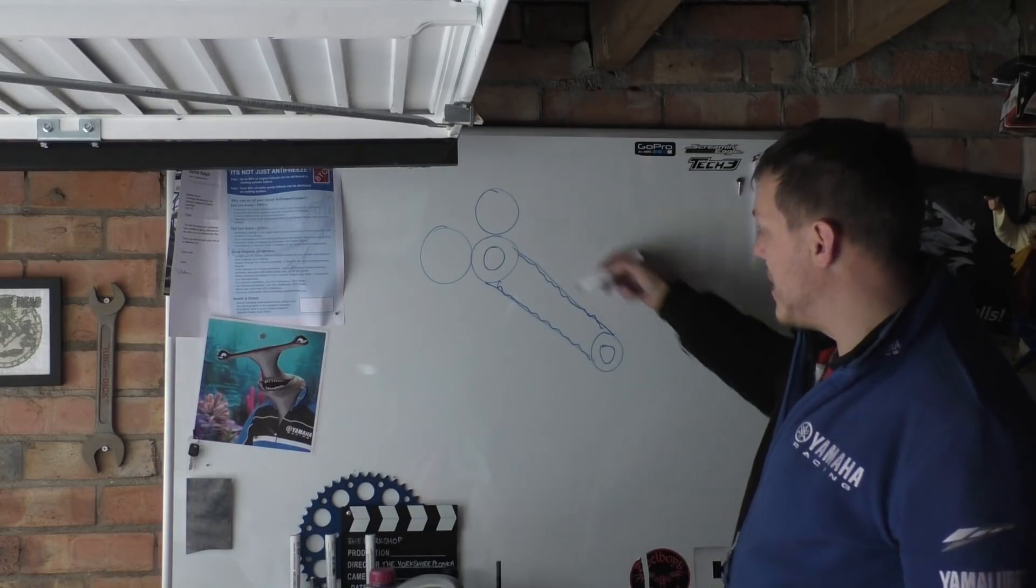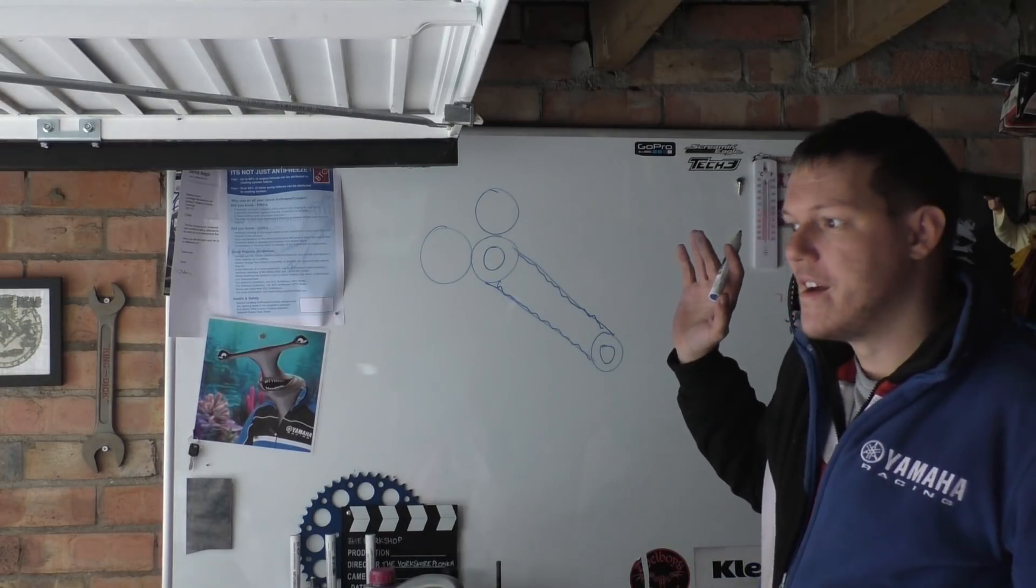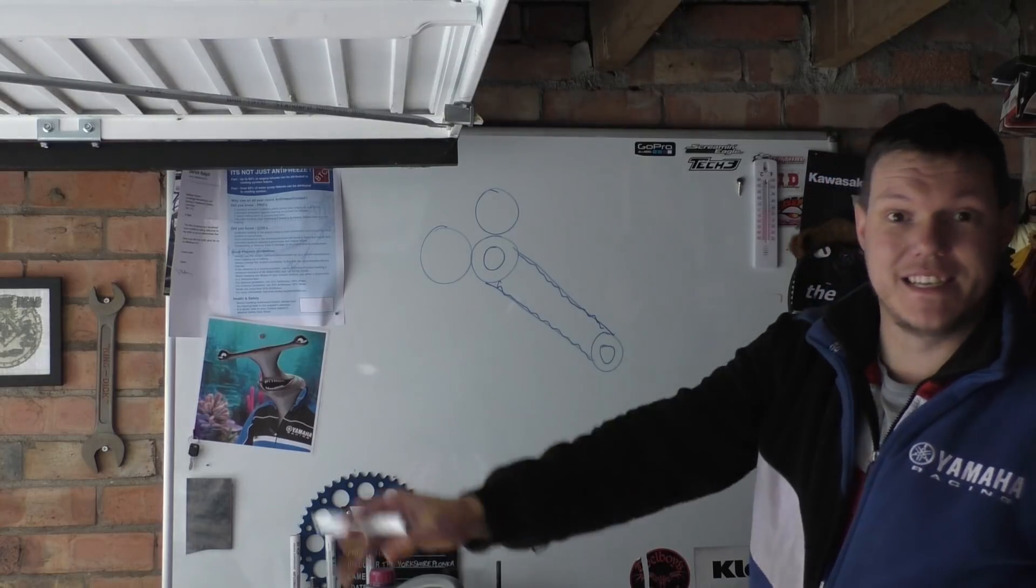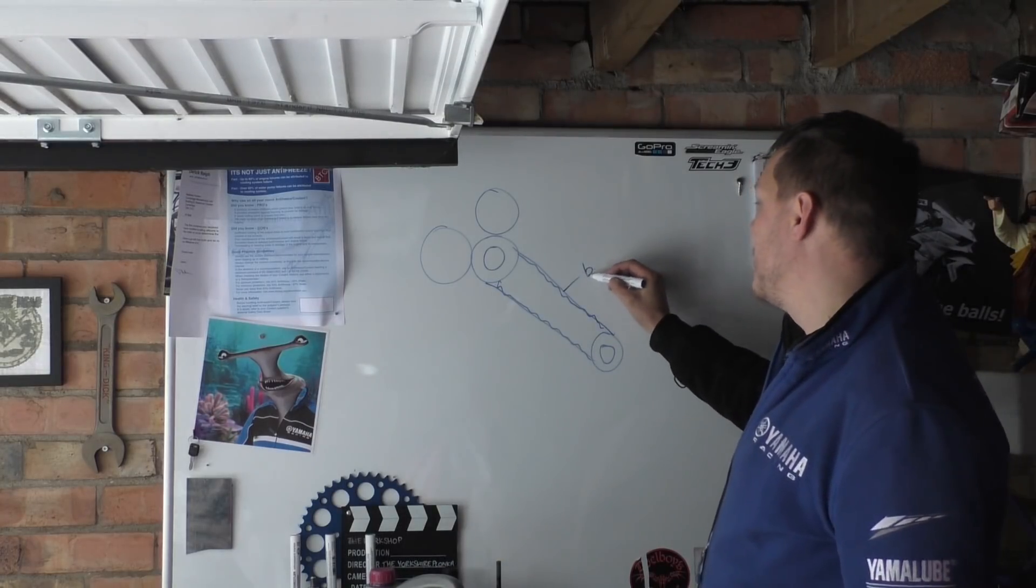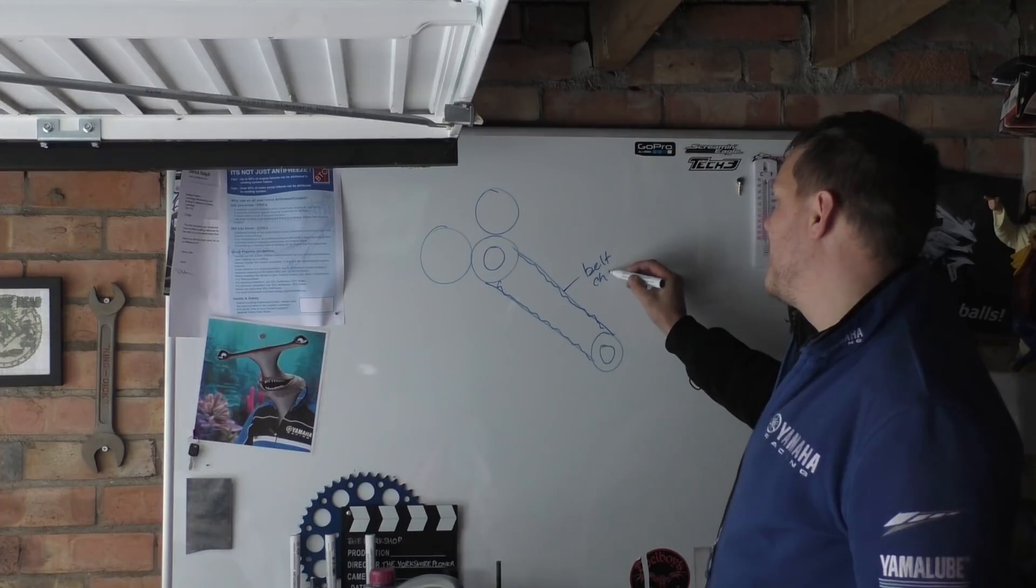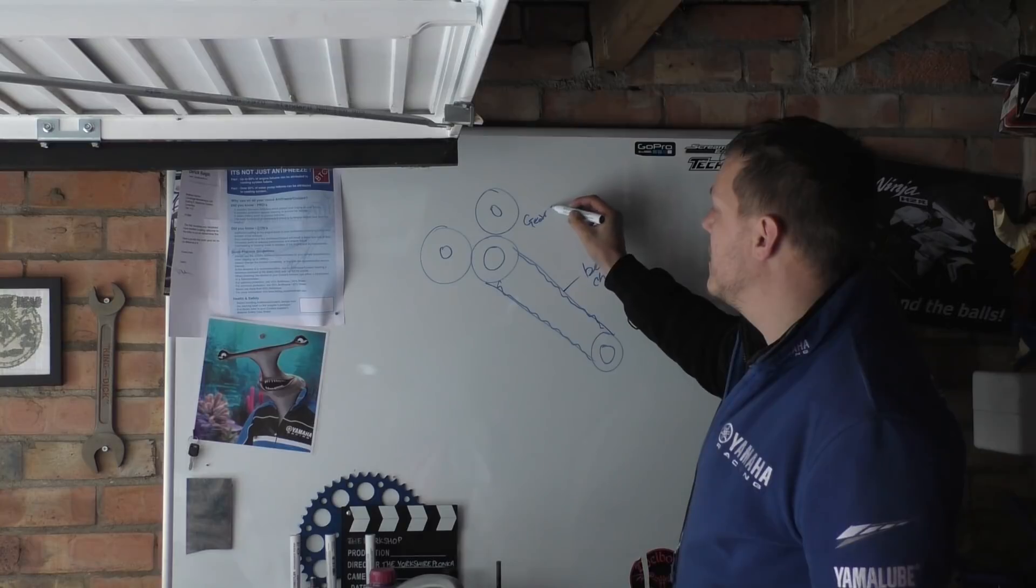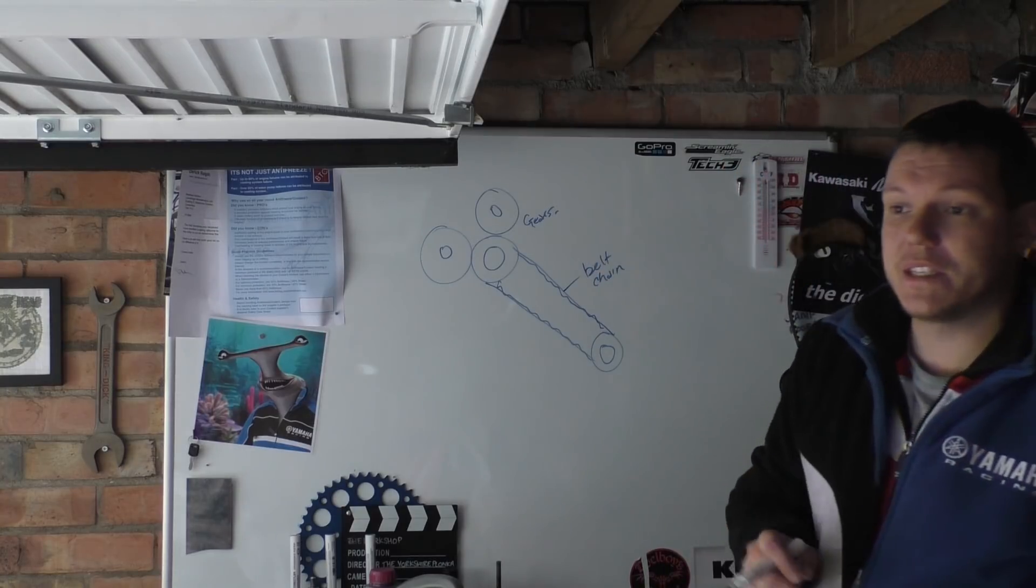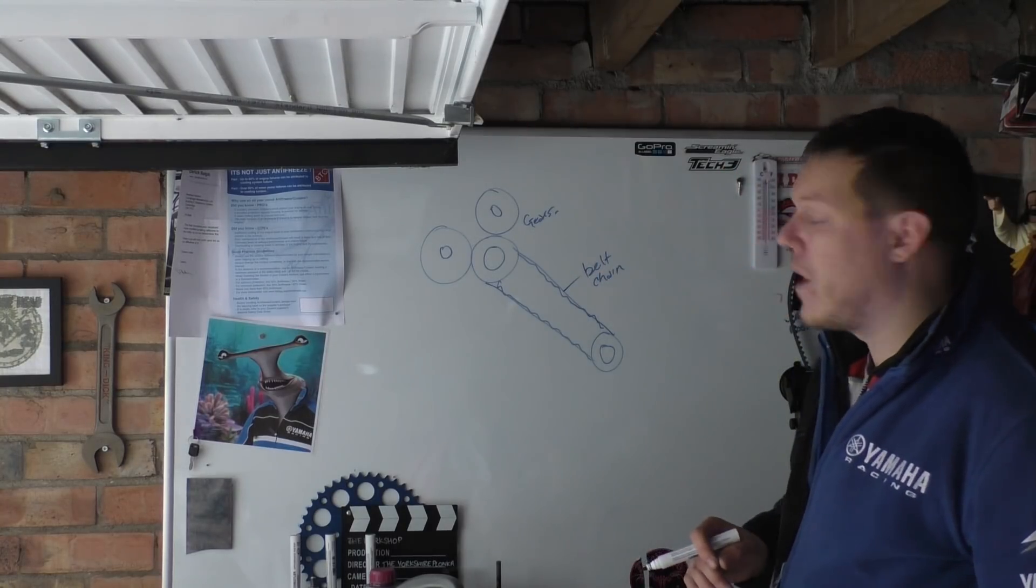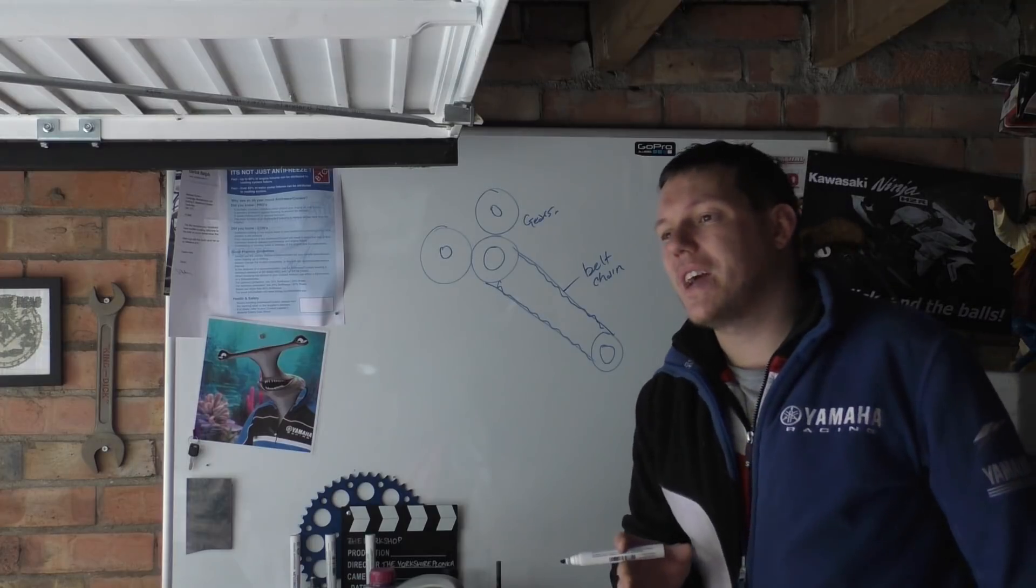You can have your main drive to traverse the biggest distance with a belt or chain, and then you have gears here to basically split that up. Why would you want to do this?